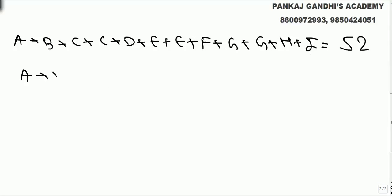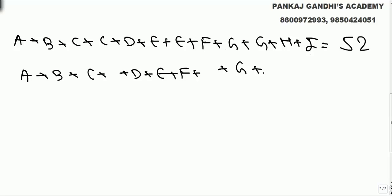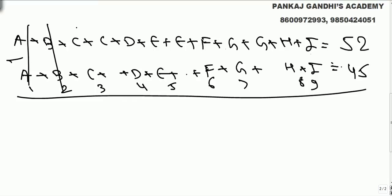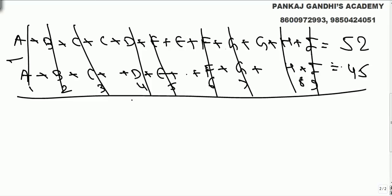If we add everything once, we don't know the individual values. But the digits 1 through 9 sum to 45. If we subtract each letter once — A, B, C, D, E, F, G, H, I — what we are left with is C plus E plus G equals 7.